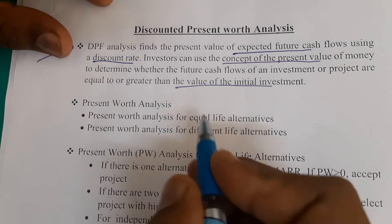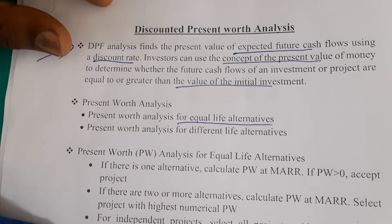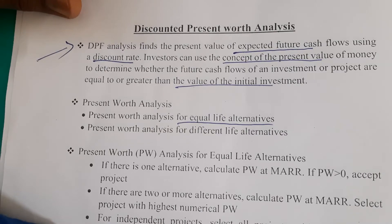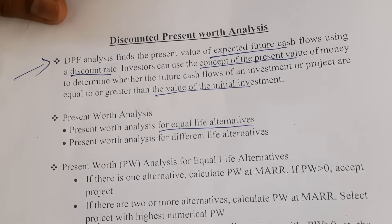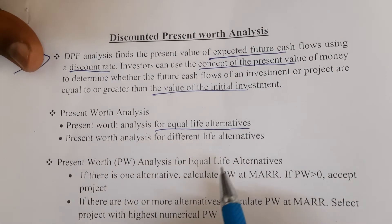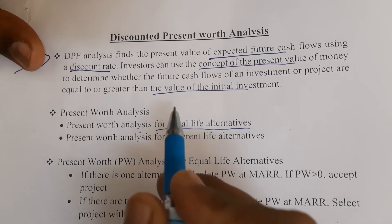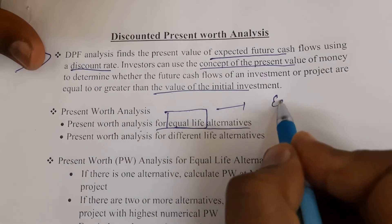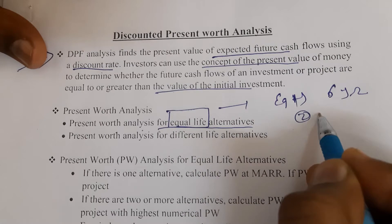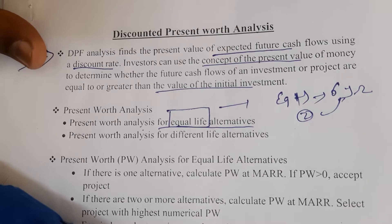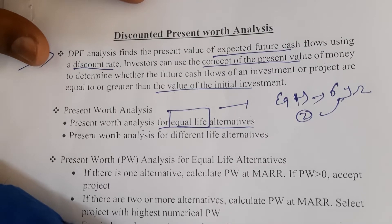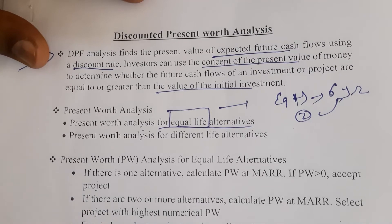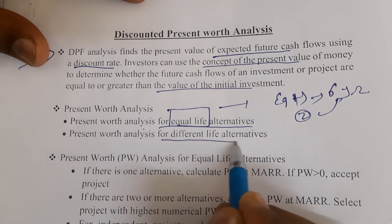For present worth analysis, we need to measure it for either equal life or different life alternatives. If you invest in equipment, there may be multiple options available to purchase. We divide into two categories: first, present worth analysis for equal life — where equipment one and equipment two have an equal life of six years.